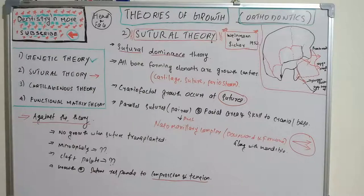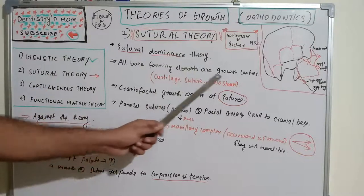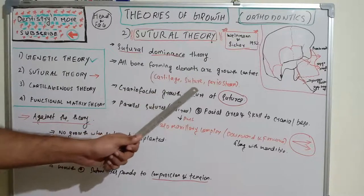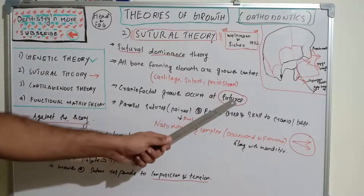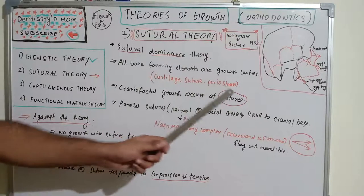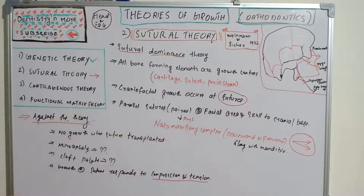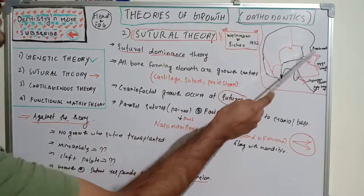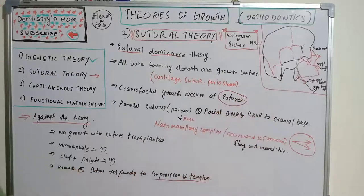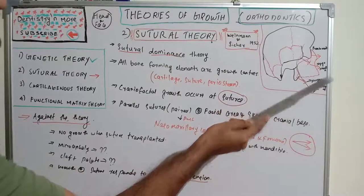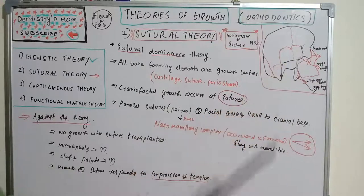According to sutural theory, all bone-forming elements are growth centers, including cartilage, sutures, and periosteum. The key point is that craniofacial growth occurs at sutures. The relevant sutures include the frontomaxillary suture, zygomaticomaxillary suture, pterygomaxillary suture, and zygomaticotemporal suture.